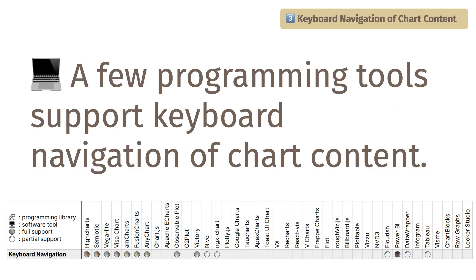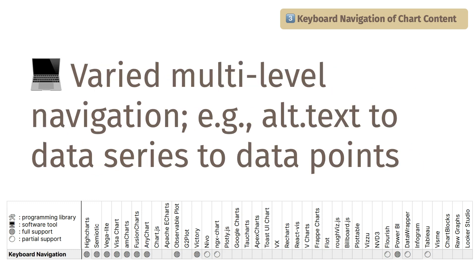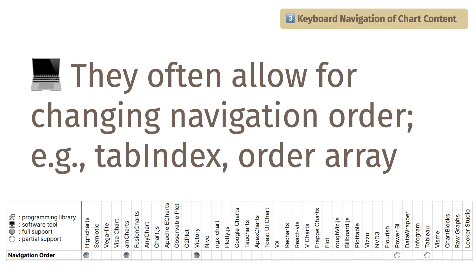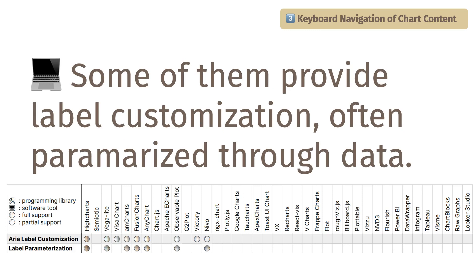Not all, but a few programming tools support keyboard navigation of underlying chart content. There was no consensus on how to make chart content accessible, but most tools supported multi-level navigation to varying degrees — for instance, starting from alternative text and progressing to data series and data points during keyboard navigation. Only a few tools allow customizing the order of navigation, such as through tab index or an order array. Some tools provide label customization, often using data to generate and customize labels programmatically.